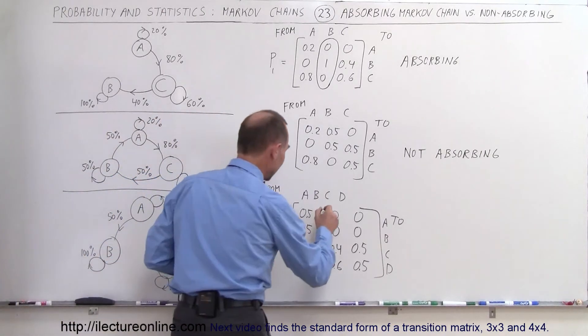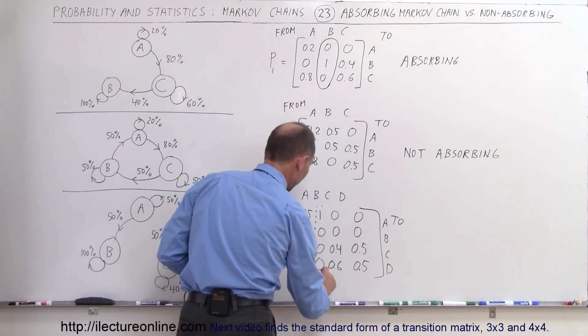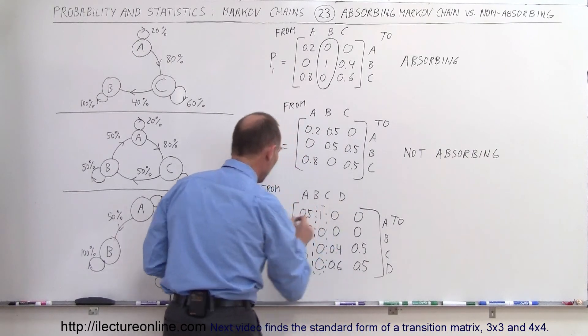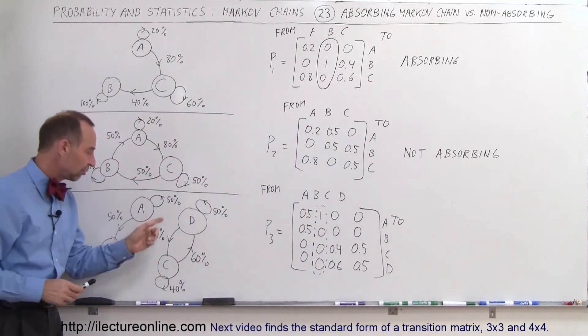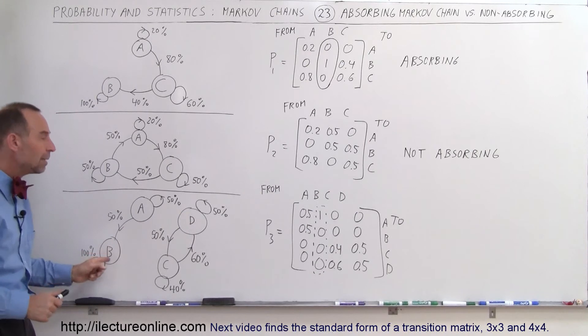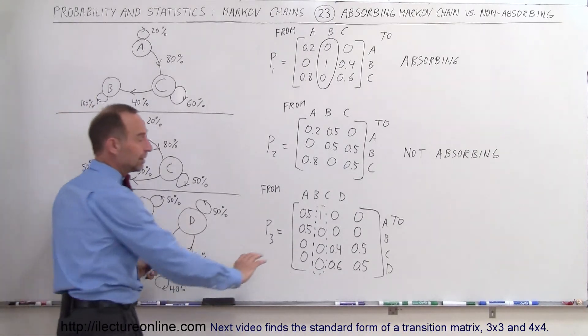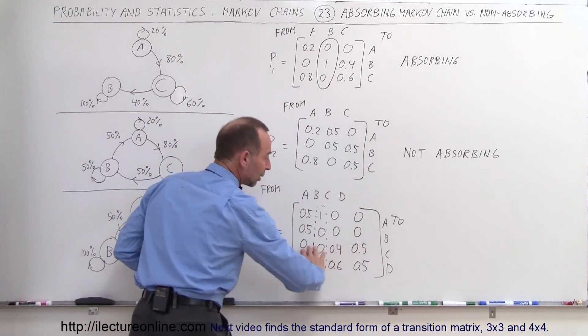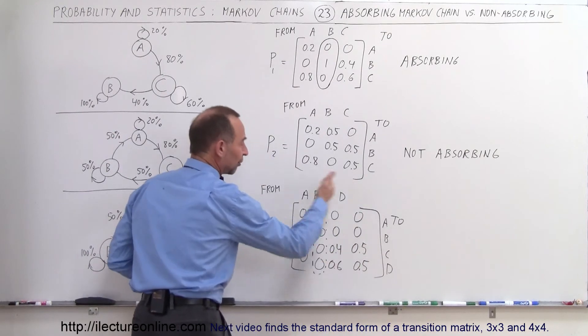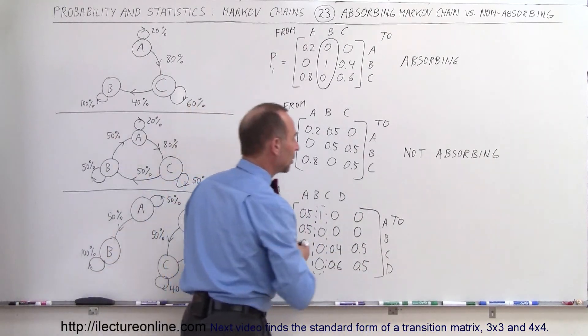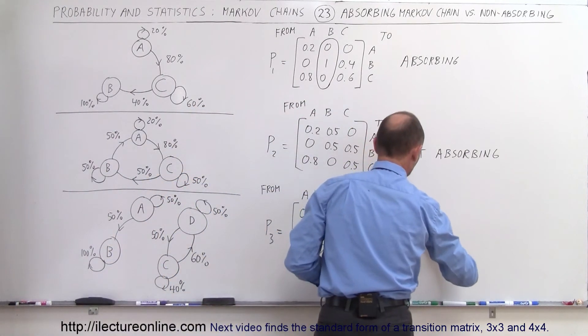even though it appears to have the indication that this would be an absorbing Markov chain, there's no possibility of getting any customers from C or D going to B, so therefore, these elements down here will not go to 0 and so therefore, this is not what we call an absorbing chain.